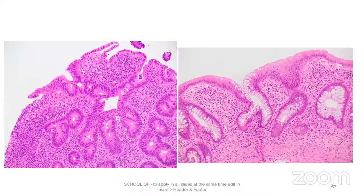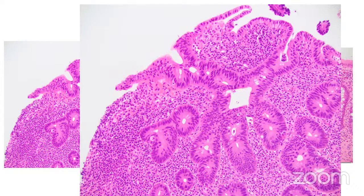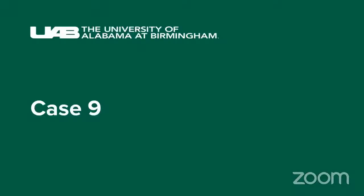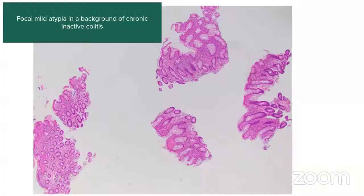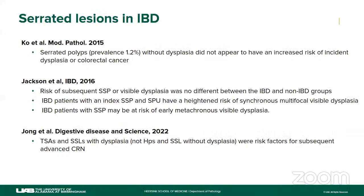One more case: background mucosa looks very atypical, but it is ulcerated and inflamed with architecturally complex glands. It could be reactive because it is so ulcerated. We performed P53, which showed homogenous staining. That could be a problem. This case was called low-grade dysplasia, though it could have been called indefinite. The follow-up biopsies have been normal so far.